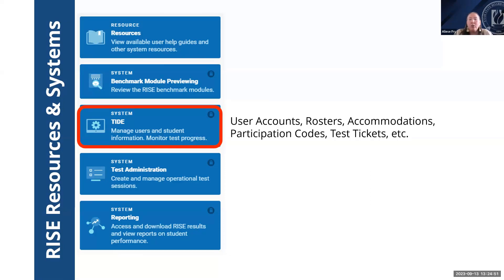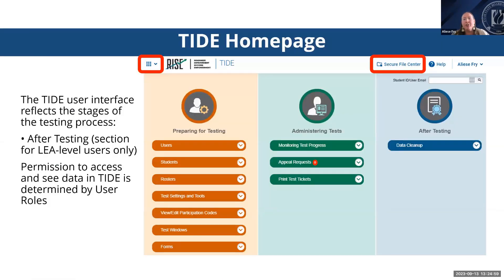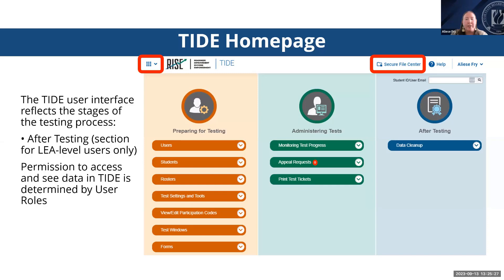Now we're going to look at TIDE — Test Information Distribution Engine. When you select the TIDE option, you'll be prompted to log in with your credentials. Once you log in, the TIDE homepage appears, reflecting the stages of the testing process. You can see there's a Preparing section, an Administering section, and an After section. The blue After Testing section is for LEA level users only. Teachers or testing coordinators will only see the first orange and green sections.